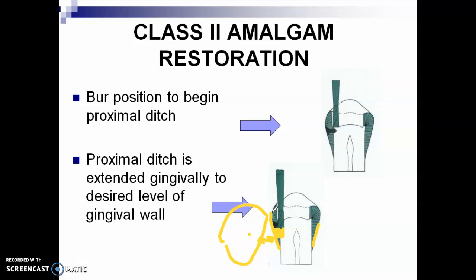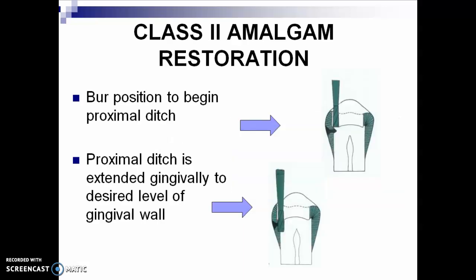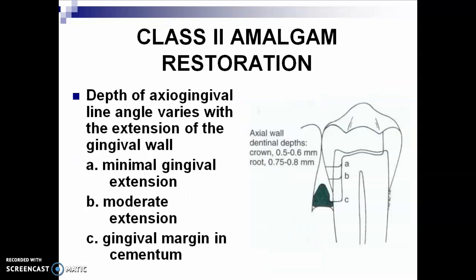So, if your clinical instructor would tell you there is still contact on the gingival floor area, you just have to lower down your gingival floor. If your clinical instructor would tell you there is still contact on the buccal, then you extend a little bit towards the buccal. The depth of the extra gingival line angle varies with the extension of the gingival wall — the deeper you get, the greater the clearance to the adjacent tooth.